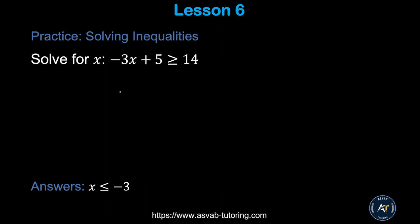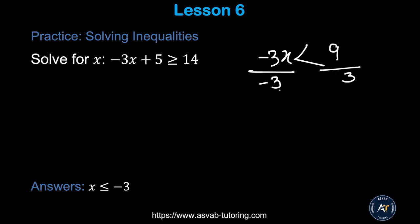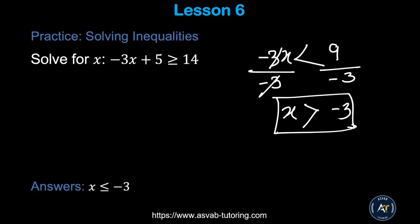Here's an important rule: if you have −3x < 9 and divide both sides by −3, the inequality sign flips. So x > −3. Any time you divide by a negative number, the sign changes. Apply this rule to solve the practice inequality and confirm your answer.